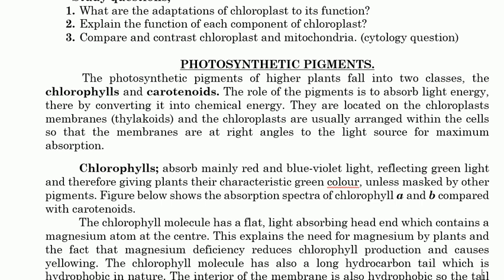Photosynthesis pigments are the kinds of pigments which are responsible for the absorption of light. They are present in higher plants — meaning the class of all green plants — because some small plants don't have photosynthesis pigments; however most plants do. These pigments fall into two categories: chlorophylls and carotenoids. Their role is to absorb light energy and thereby convert it into chemical energy. They are located in the chloroplast thylakoid membrane, and the chloroplasts are arranged within cells so that the membranes are aligned to go toward the light source for maximum absorption.